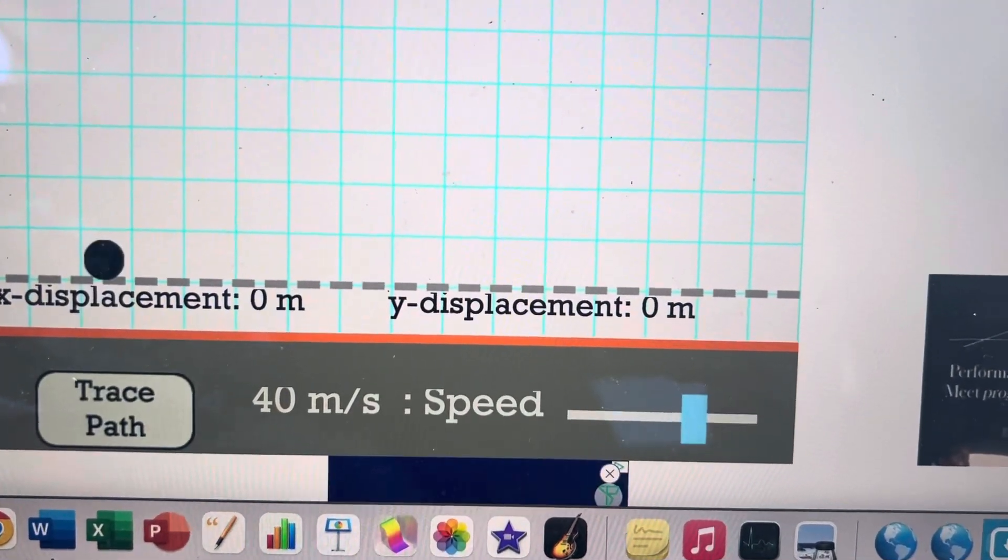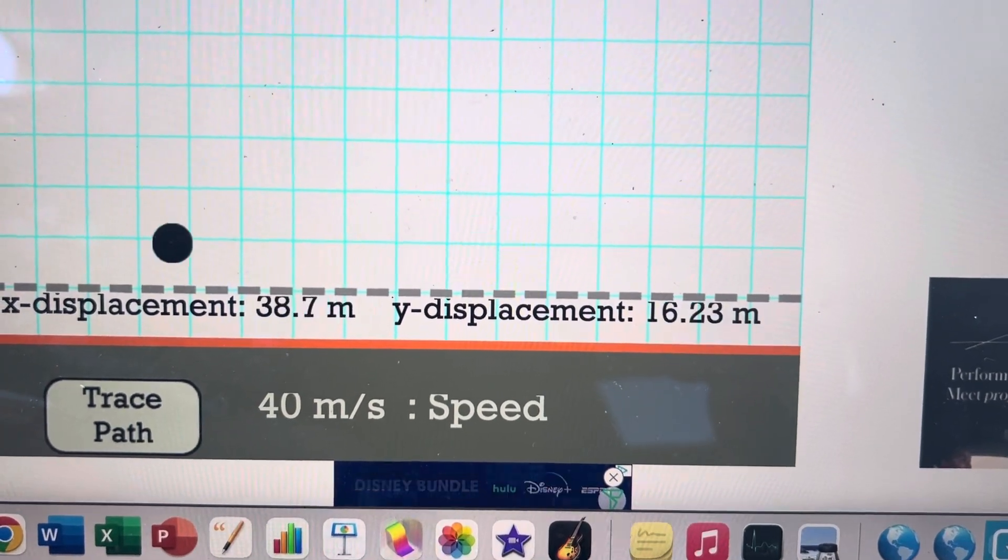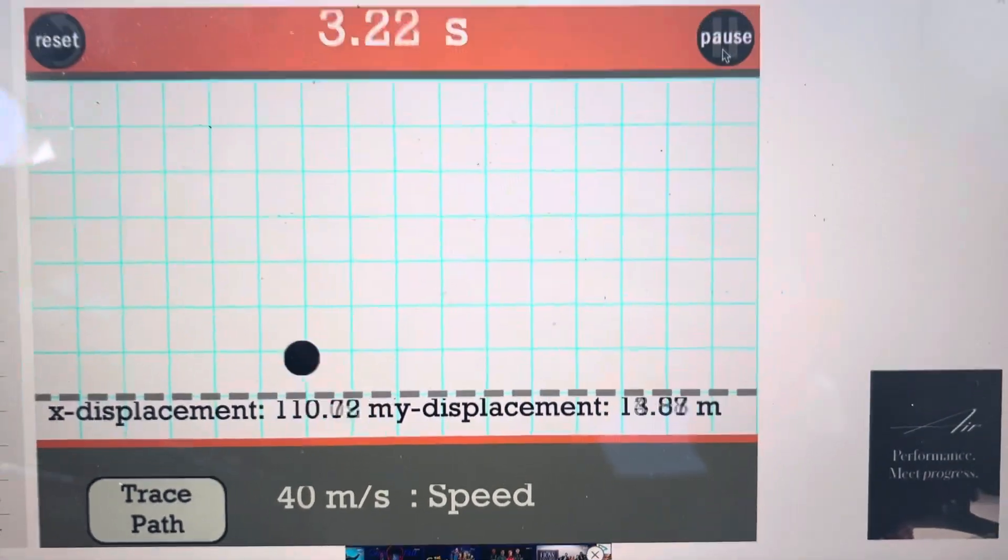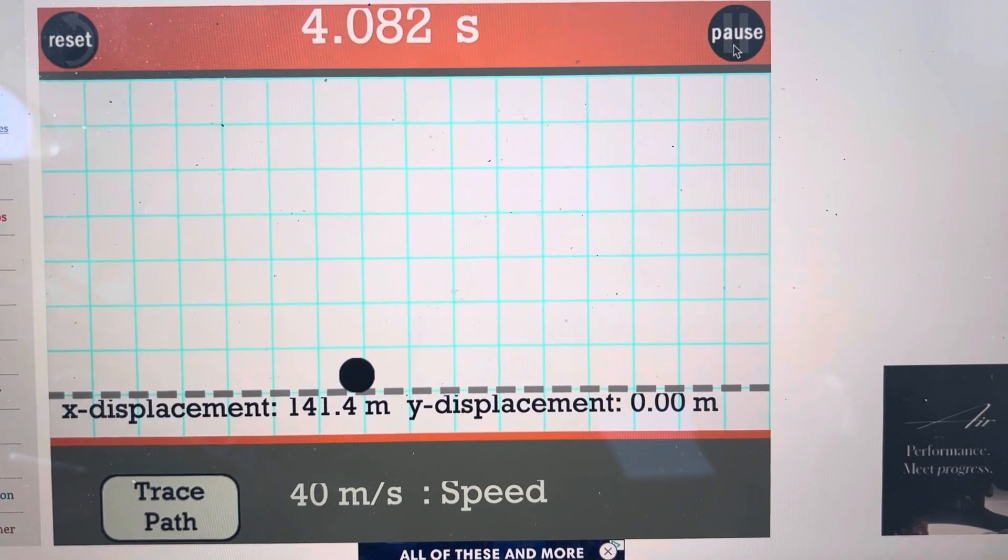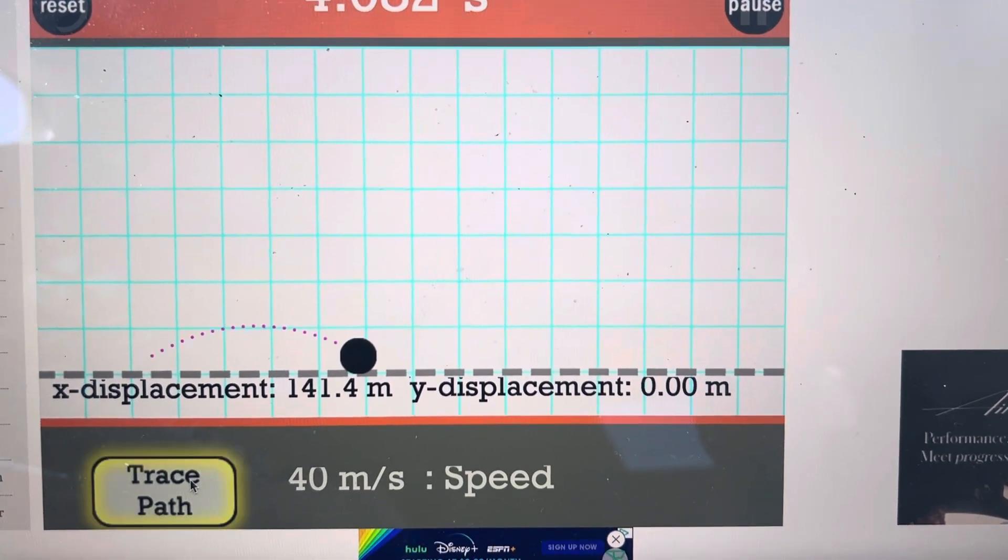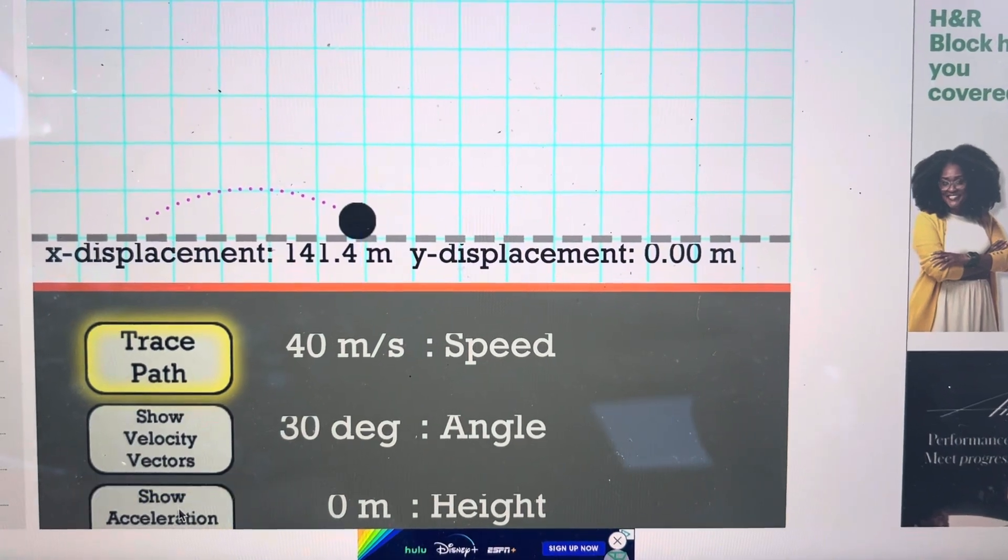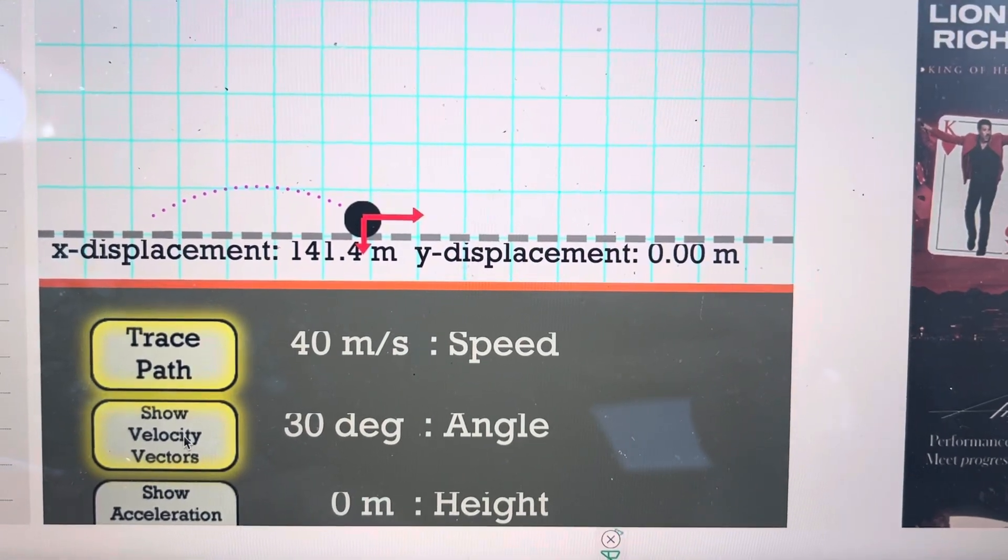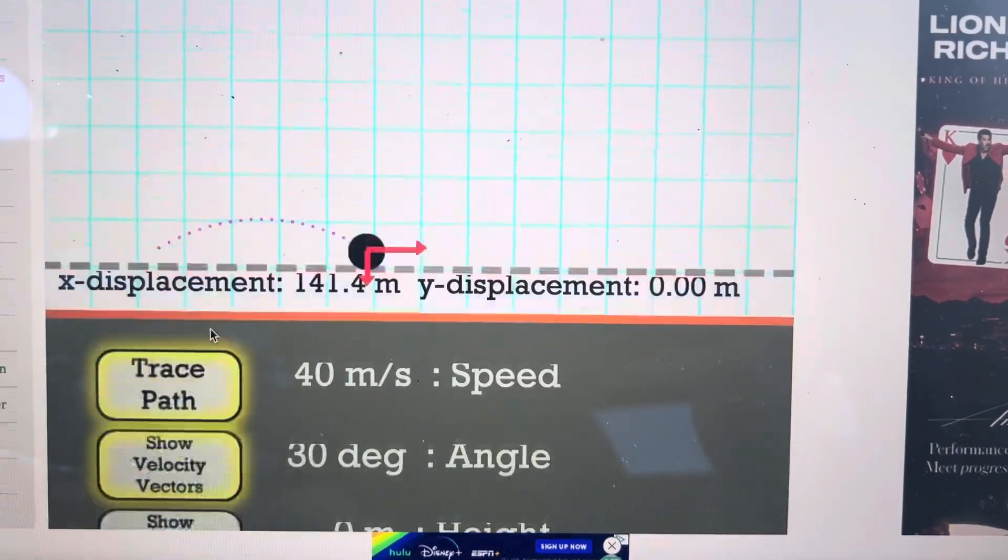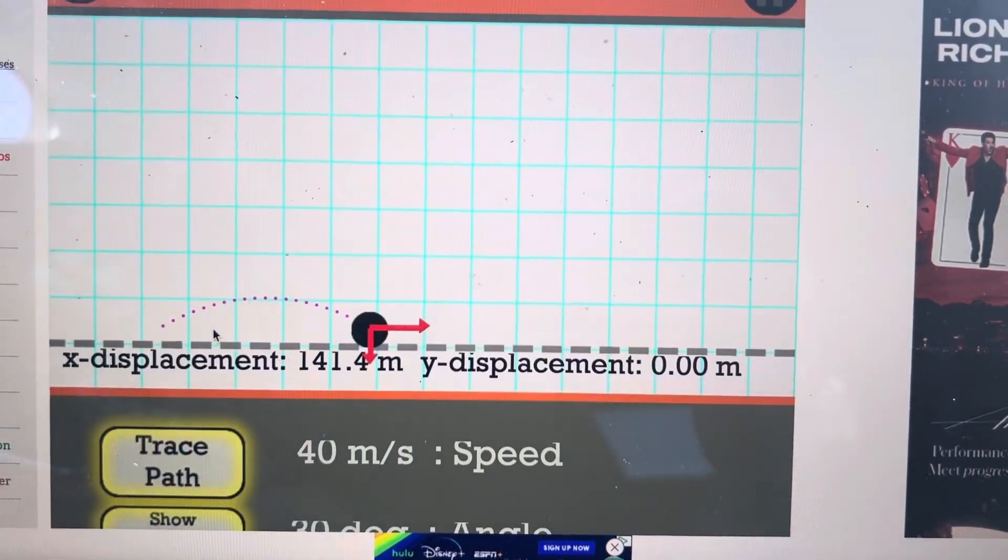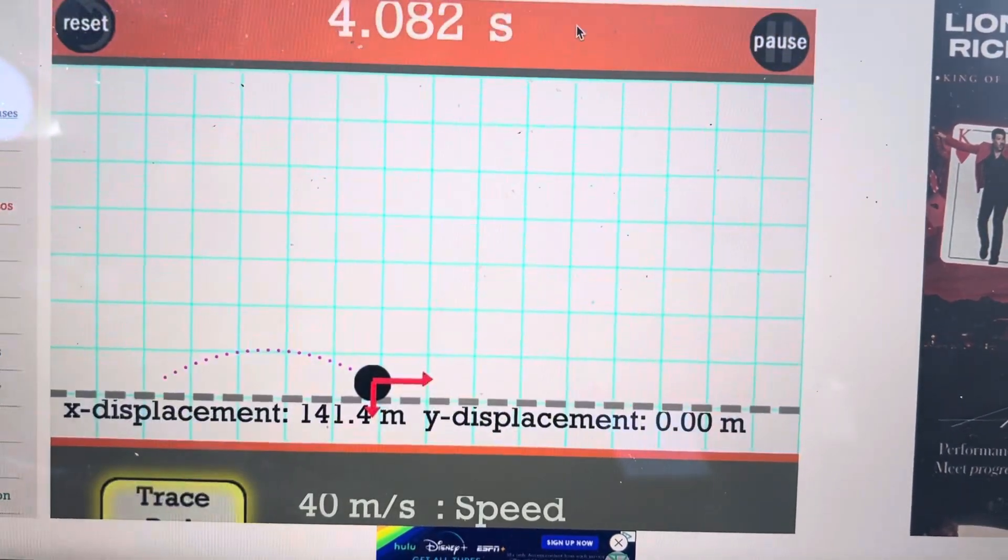This simulator allows us to watch the motion and adjust what it does. Keep in mind we can turn on buttons to trace the path, show which way acceleration is, and show which way the velocity is at different points.